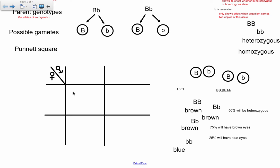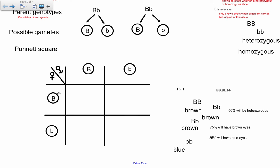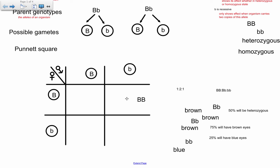Now all that's left is to make a Punnett square. I have a male and female symbol here, though for this cross it's not necessary. Each parent can pass on either a big B or a little b. Filling in the boxes: the first is big B, big B; the second is big B, little b; the third is big B, little b; and the final one is little b, little b.